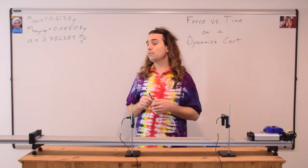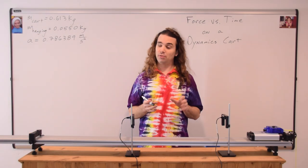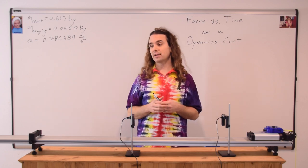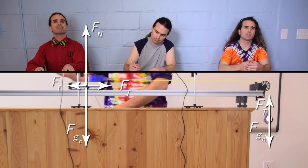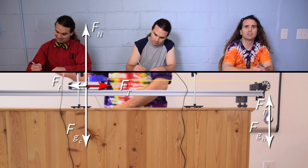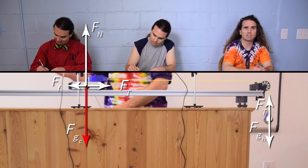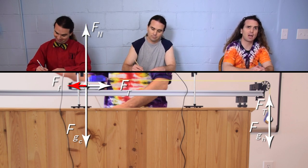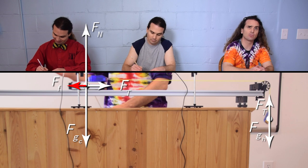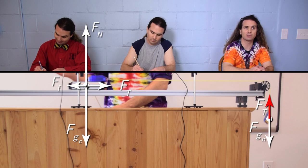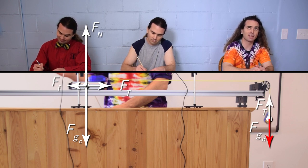Could you please give me all the forces and their directions in both free body diagrams during part two, while the system is accelerating? The forces on the cart are: the force of tension to the right in the direction of the string, the force of gravity on the cart straight down, the normal force perpendicular to the track and straight up, and the force of friction to the left, opposite the direction the cart is moving. The forces on the hanging mass are: the force of tension upward in the direction of the string, and the force of gravity on the hanging mass downward.